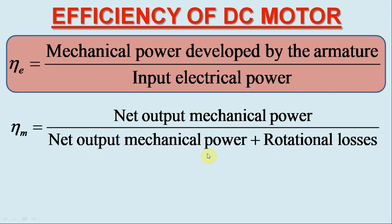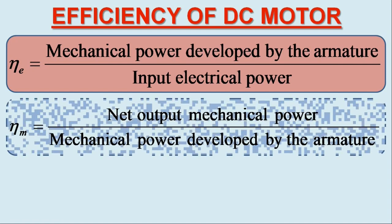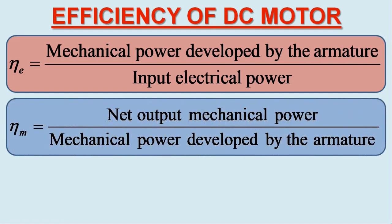The term net output mechanical power plus rotational losses is nothing but the mechanical power developed by the armature, Eb×Ia. So the mechanical efficiency of the DC motor is written as net output mechanical power over mechanical power developed by the armature.